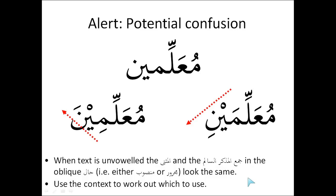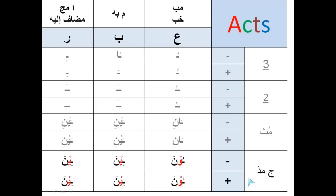Use the context to work out which to use. Let's update our acts table: so far we've dealt with منصرف words, then ممنوع من الصرف, then مثنى (the dual), and in this video we've dealt with جمع المذكر السالم. Whether indefinite or definite, there is no difference in the final letter — when it's indefinite we don't have a double فتحة on the نون, only a single فتحة, so we don't concentrate on the last letter when looking at جمع المذكر السالم.